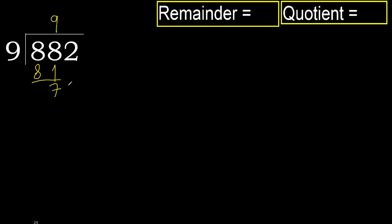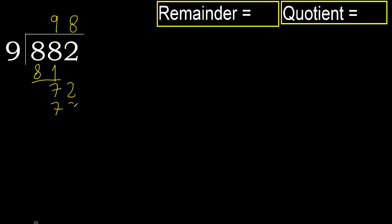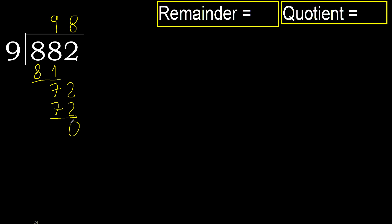Next, bring down: 72. 9 multiplied by 8 is 72. 72 is not greater. Subtract 0, next.